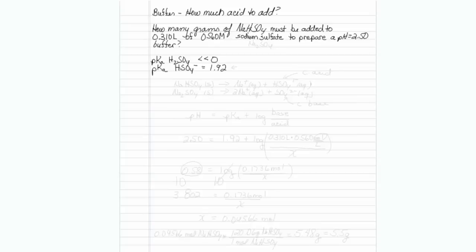Now right off, you know that if you're going to make a buffer, it has to be within one pH unit of the pKa. So chances are we're dealing with the 1.92, not the much less than zero.